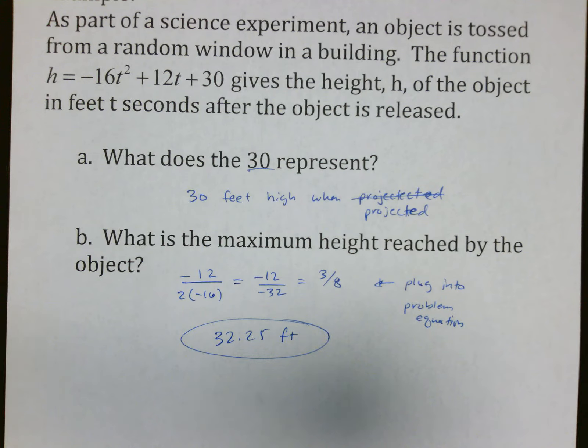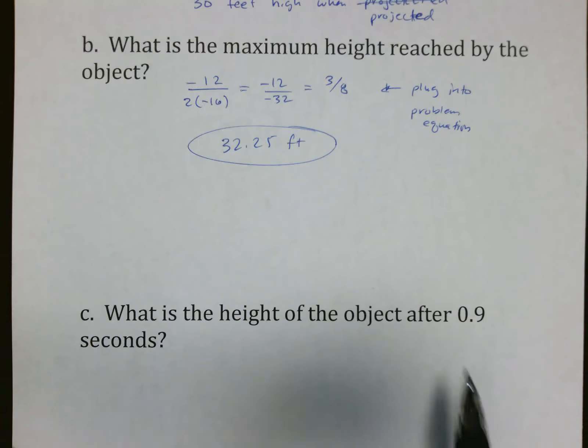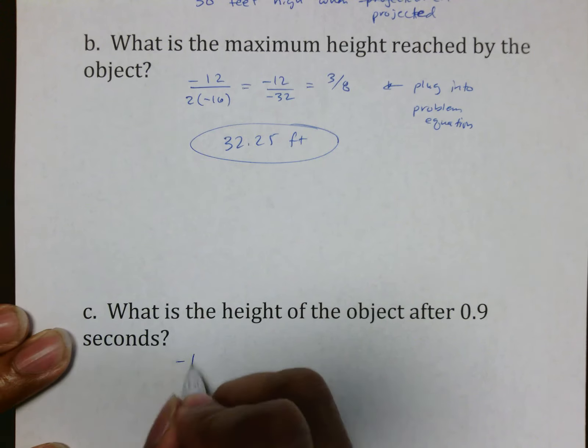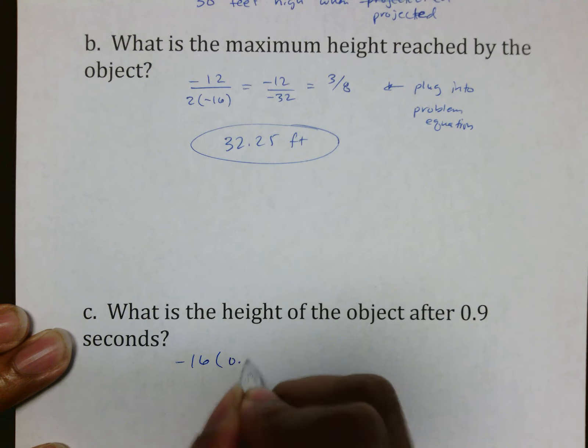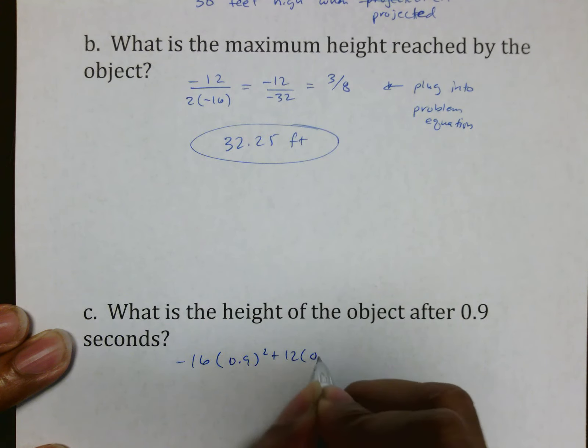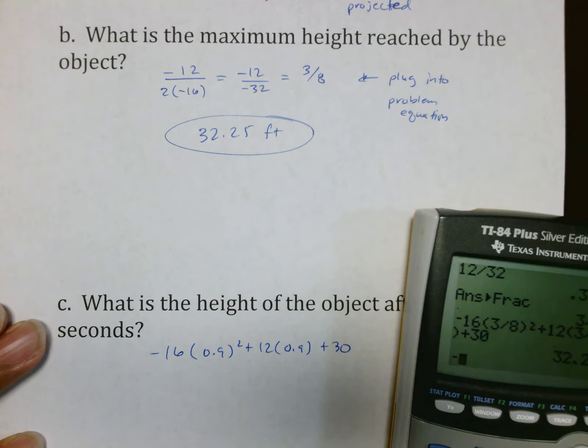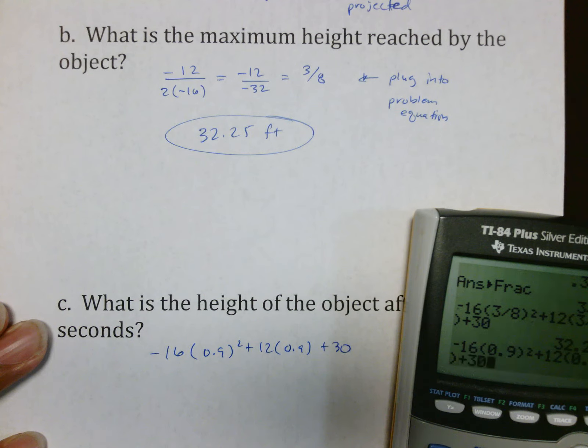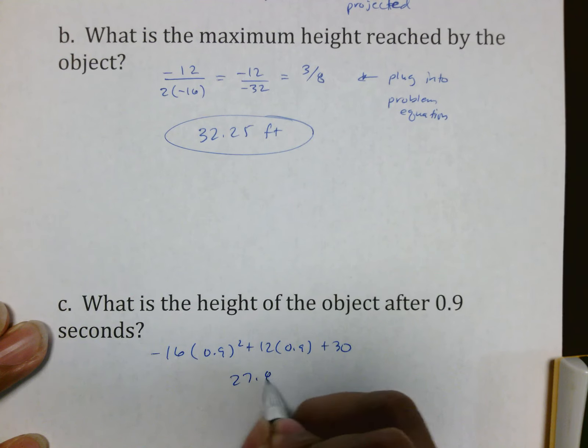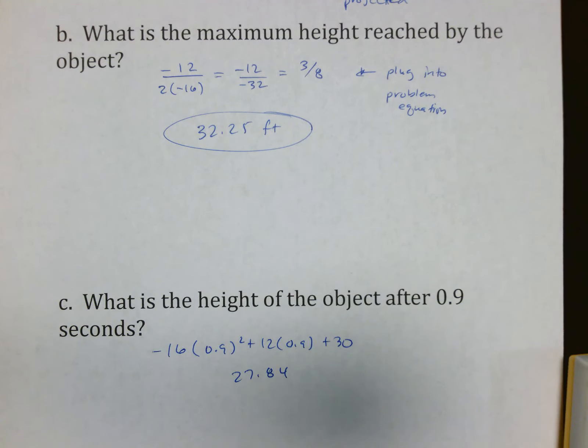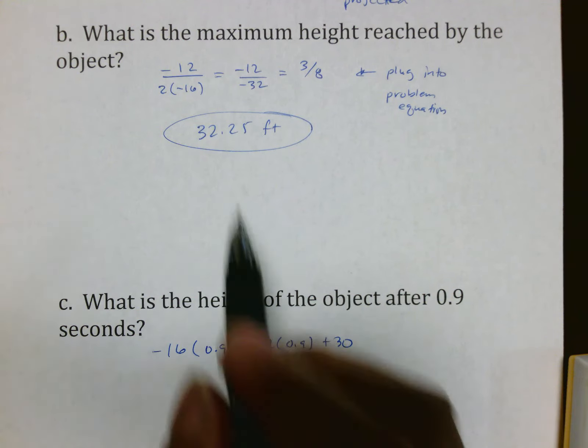What is the height of the object after 0.9 seconds? If I want the actual height after 0.9 seconds we plug it in so we do negative 16 times 0.9² plus 12 times 0.9 plus 30, which says 27.84, and that does at least make sense because if it was higher than 32 feet it means that that would not be the max.